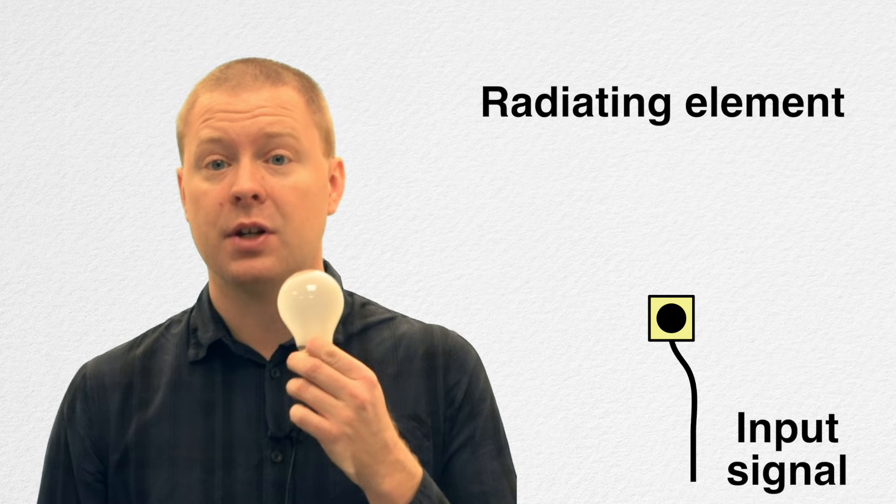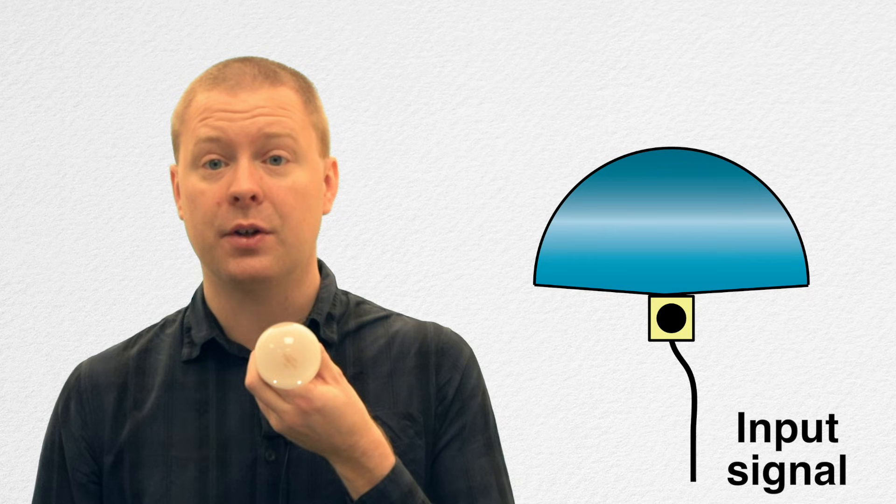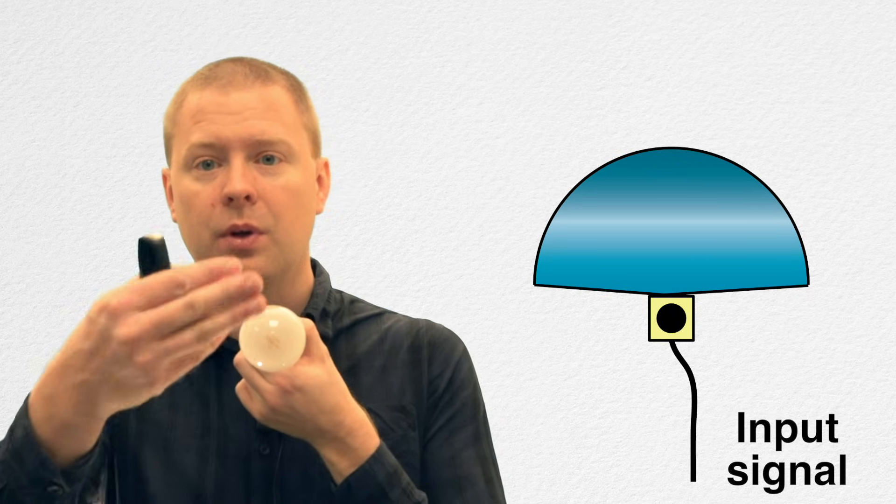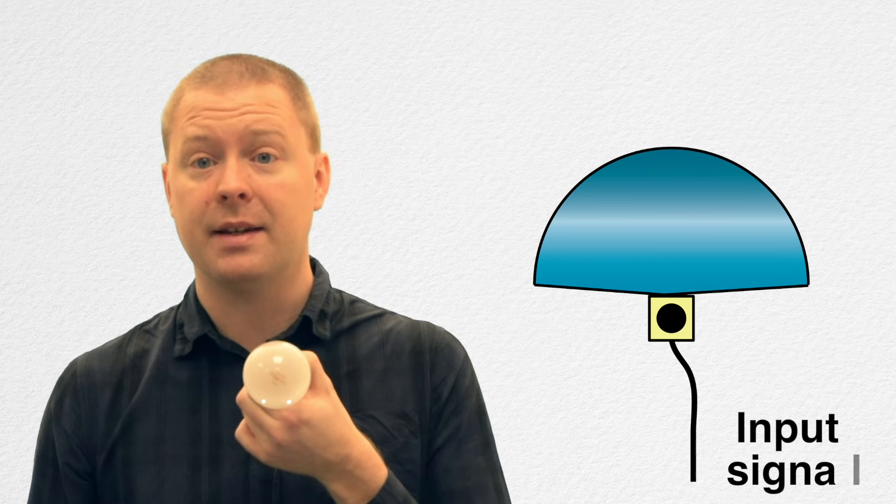The first thing to know about an antenna is that it contains a radiating element, just as a light bulb, that is radiating electromagnetic waves in a particular direction. In this case it will radiate in this direction, and that's the same thing with the typical radiating element in an antenna.